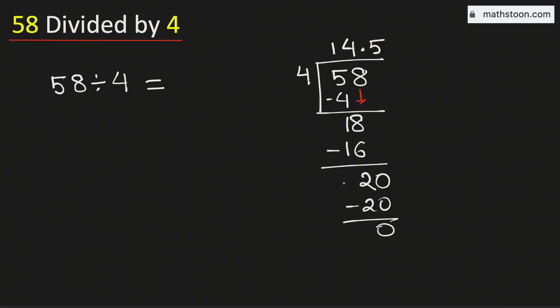As we have obtained the number 0, so we will stop. Therefore, 58 divided by 4 is equal to 14.5, and this is our final answer.